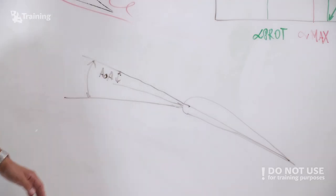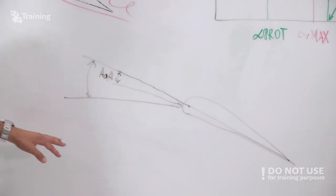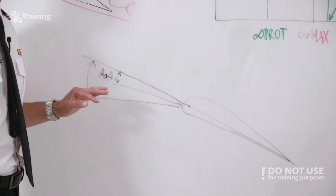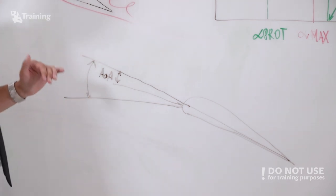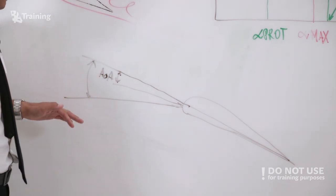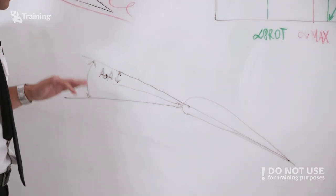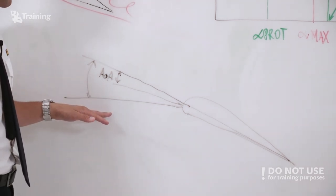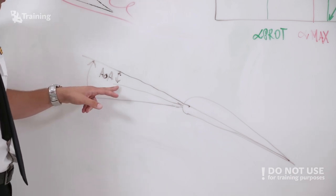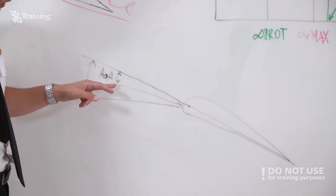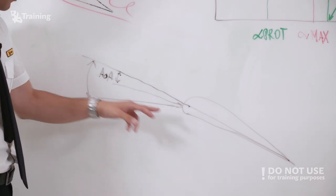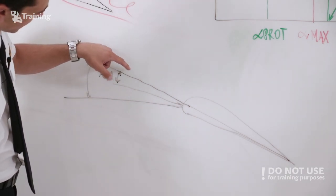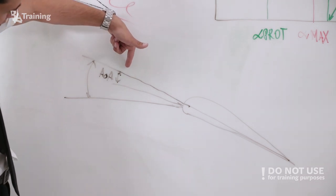In order to better understand stall, first we have to understand the angle of attack. The angle of attack is the angle between the relative airflow — represented by this line — and the chord line of the airfoil, in this case this upper line.